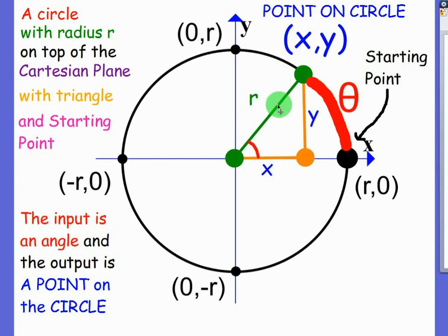The hypotenuse is the radius, and furthermore, the width of the triangle is just the x value of the point and vice versa. The y value of the point is the height of the triangle and vice versa. So we use trigonometry to figure out the point on the circle, and that's what kind of makes the unit circle complex.